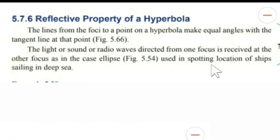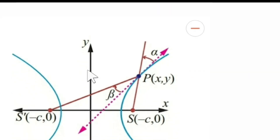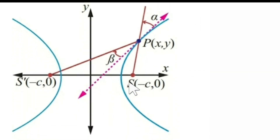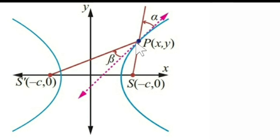This property is used in spotting the location of ships sailing in the deep sea. Coastal guard stations S and S dash are positioned, and this is the position of the ship. If any signal is given from station S, it will be received at the other coastal guard station S dash.